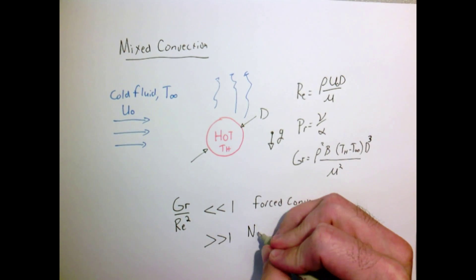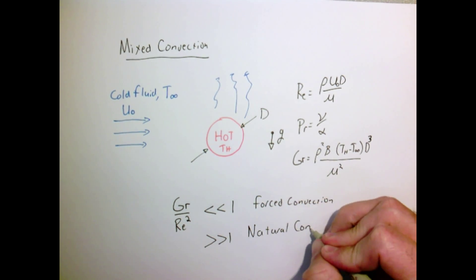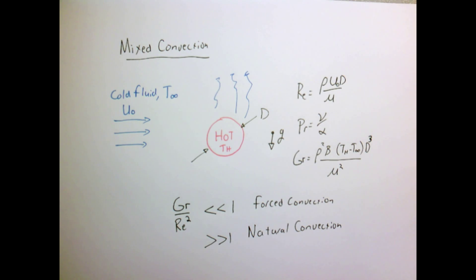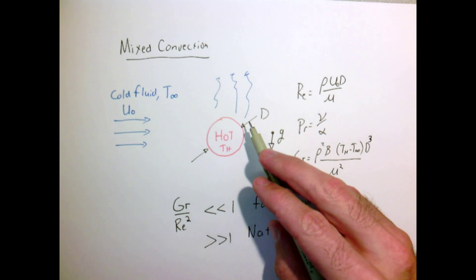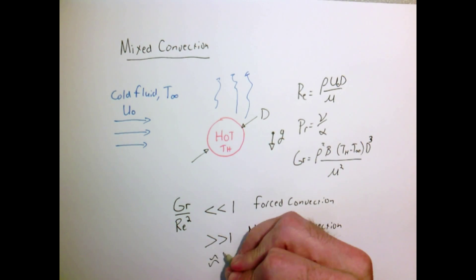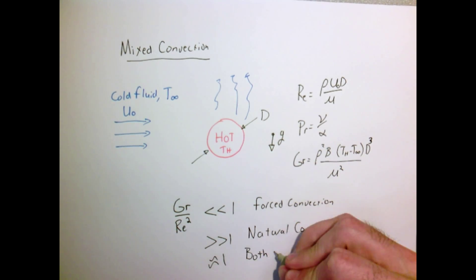If the number is much, much greater than 1, we'd be in the regime of natural convection. That would mean that even though we're blowing on the object, that velocity is relatively small compared to the velocity that's set up by the density differences from the hot air around our object. If it's on the order of 1, then they both matter.